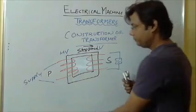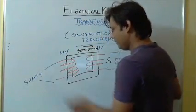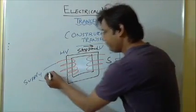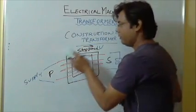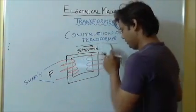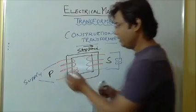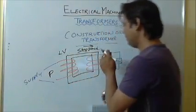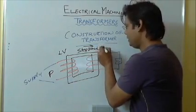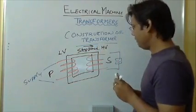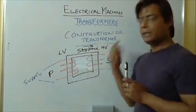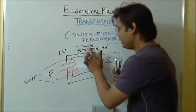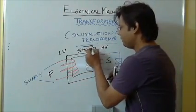When my primary is connected to the supply and it is called low voltage winding, and this becomes a high voltage winding, it is stepping up. So it will be called a step-up transformer.